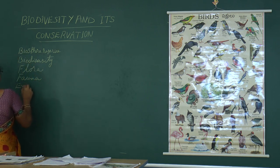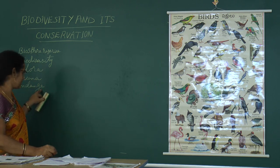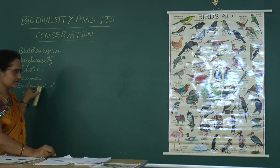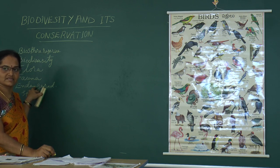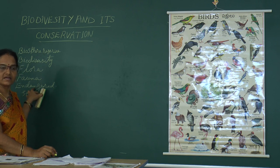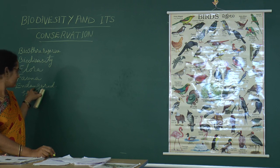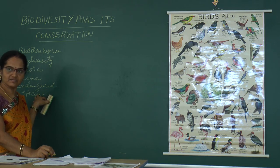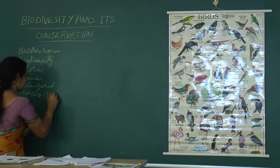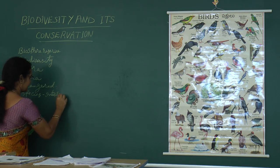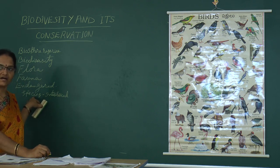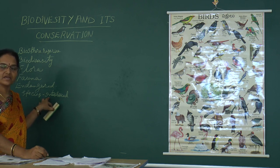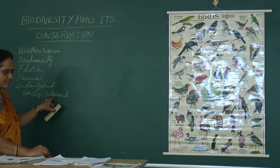Next: endangered species. Endangered species means the species which are going to become extinct is known as endangered. Species is the term used for organisms which can interbreed among themselves, otherwise called interbreed among themselves, is known as species.